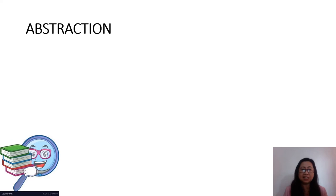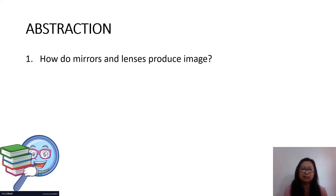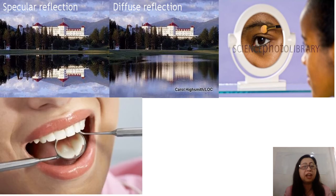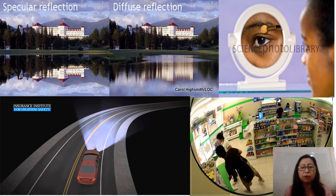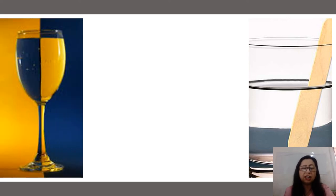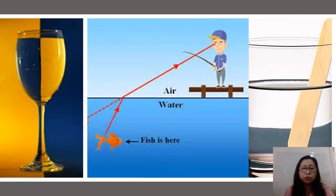Now let us summarize what we've learned today. How do mirrors and lenses produce images? Mirrors use the property of light called reflection to produce an image. Reflection is the bouncing of light as it strikes the surface of a material. Lenses, on the other hand, use the property called refraction to produce an image. Refraction is the bending of light when it passes through the boundary between two media of different optical densities.